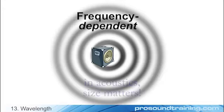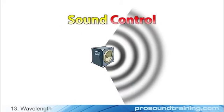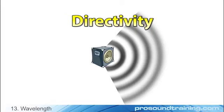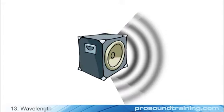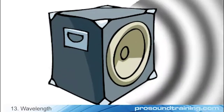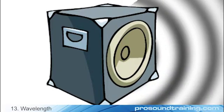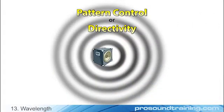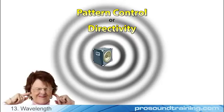Wavelengths relate these effects to physical size. Wavelength profoundly affects our ability to control where sound does or doesn't go. Concentrating the sound onto a specific area — a property called directivity — requires an acoustic source that is large relative to the wavelengths we desire to control. Control becomes increasingly difficult with decreasing frequency, since low-frequency wavelengths can be very long. Pattern control is one of the most useful attributes of a loudspeaker for sound reinforcement. Without it, we're in big trouble.